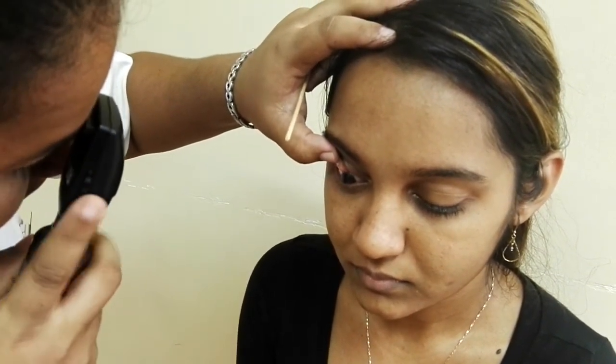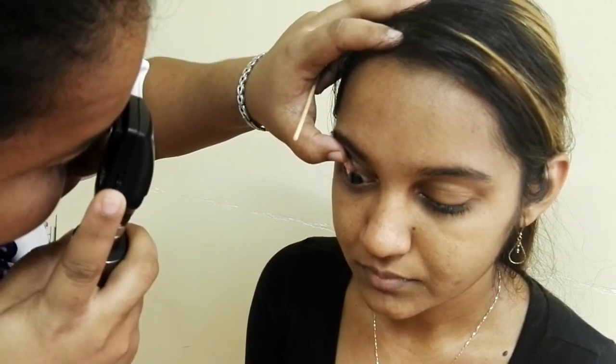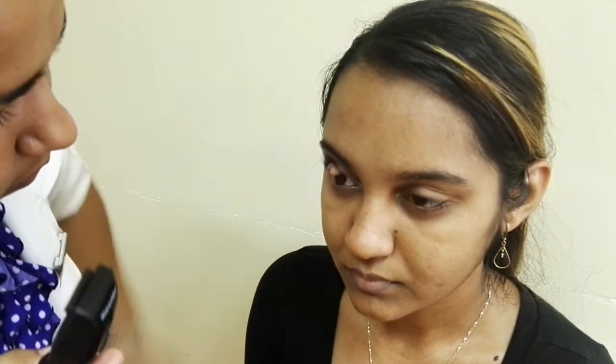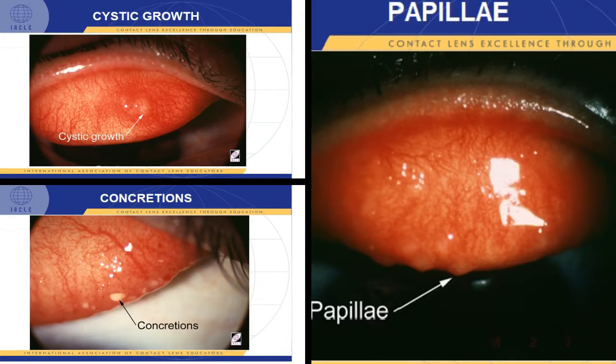Hold the eyelashes against the skin while examining. Examine using the plus 10 lens of the direct ophthalmoscope. If the eyelid does not come down automatically, have the patient look up and blink. This is to be repeated on the opposite eye. Look for signs of redness, swelling, roughness, concretions, and transparency, which may be seen in various conditions.